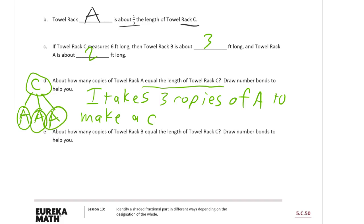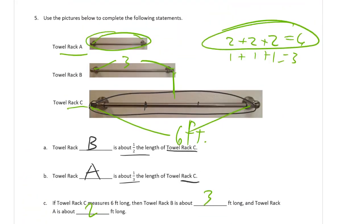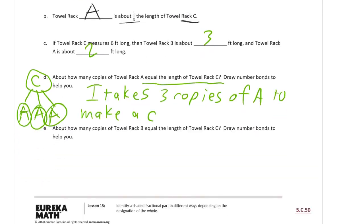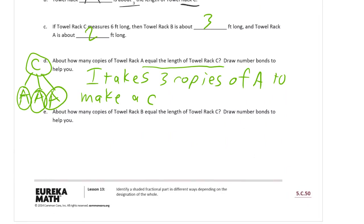About how many copies of towel rack B equal the length of towel rack C? So how many B's does it take to make a C? Well, B is half of C and it takes two halves to make a whole. Or two threes to make a six. So, same thing, except we have a different number here. It takes two, two copies of B, right?